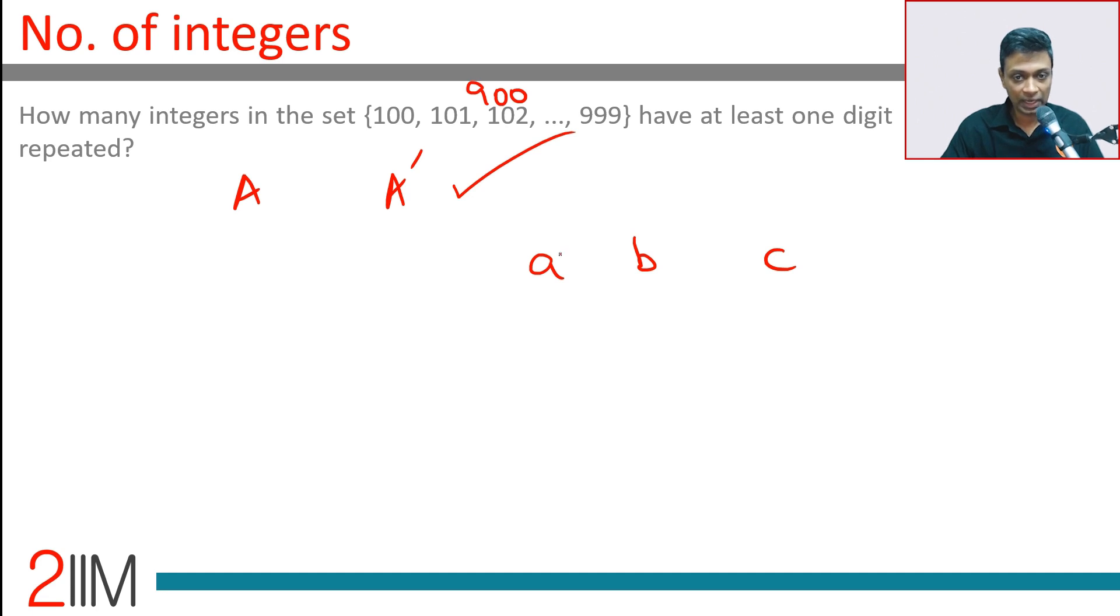Where nothing is repeated, A can go from 1 to 9, 9 possibilities. B can go from 0 to 9, except A, 9 possibilities.